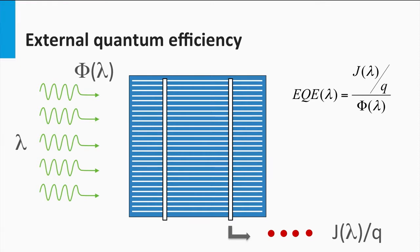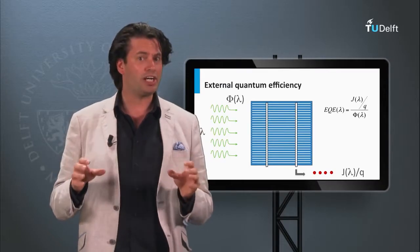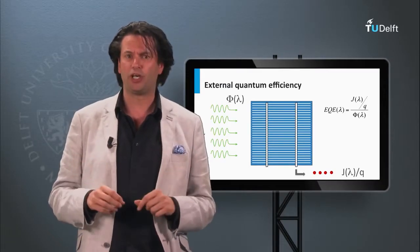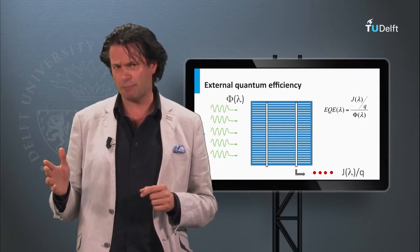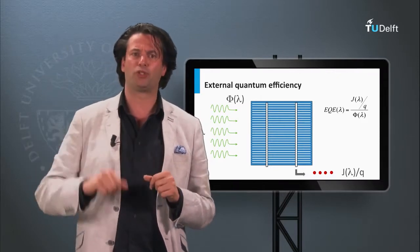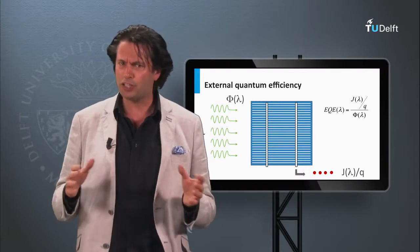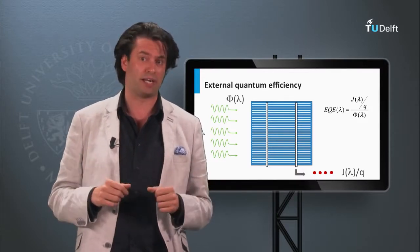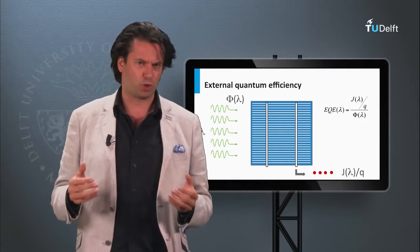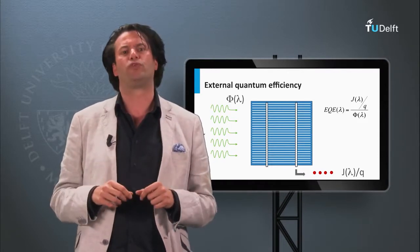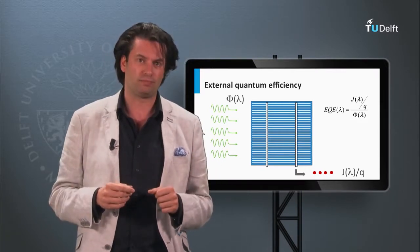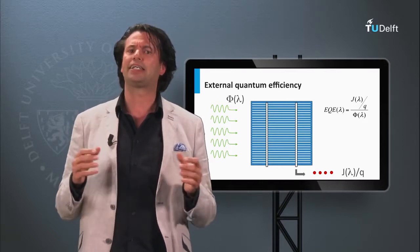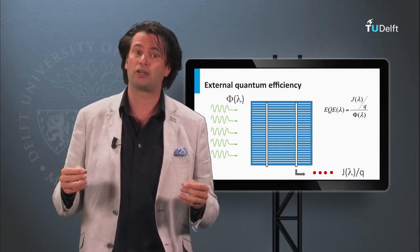Not every photon incident on a solar cell will result in electrons collected at the contacts. Lower EQE can be attributed to several optical and electrical loss mechanisms for charge carriers. For example: photons can be reflected back from the solar cell; photons are not absorbed as they have an energy smaller than the band gap; the absorber layer is too thin and does not absorb all photons; parasitic absorption losses in the inactive PV layers of the cell; and recombination of the light-excited charge carriers before they are collected at the contacts.